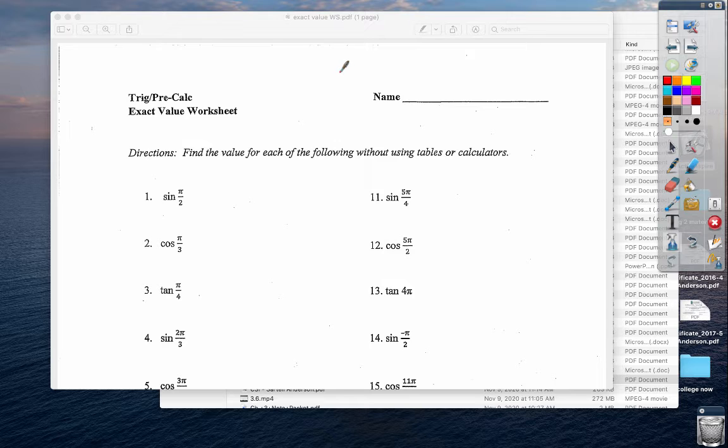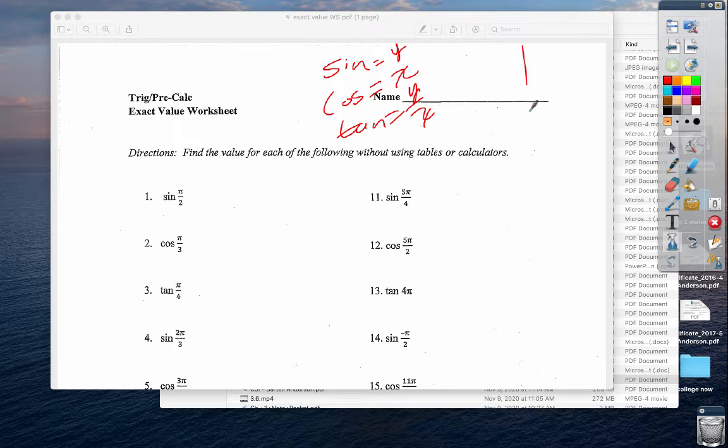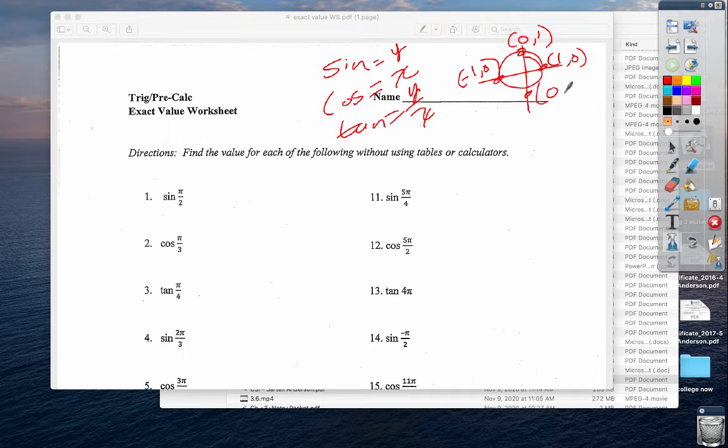We want to look at sine is the y coordinate, y over r. Our cosine is the x coordinate. Our tangent is the y over the x coordinate. That's for the unit circle. So you might want to think about those things. And what are they? 1,0; 0,1; and -1,0; 0,-1. So these are all things that can be helpful to you as you go through this.